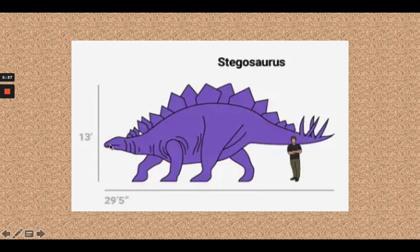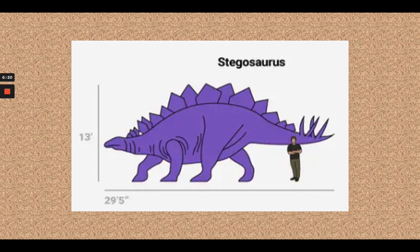Stegosaurus is kind of interesting because Stegosaurus's head is down low, about the same height as a man. So if you grow up to be about six feet tall, you could probably pet Stegosaurus on the top of its head. But if you look at the total height of his whole body as it curves up, it's 13 feet tall — about as tall as an elephant. Stegosaurus is a little bit longer than a typical elephant, which is about 21 feet long.